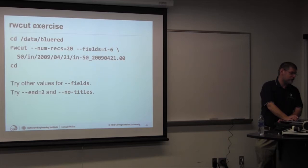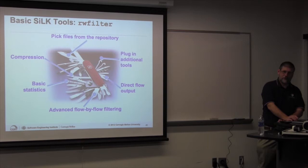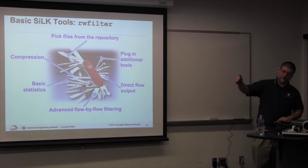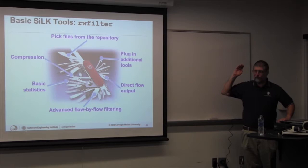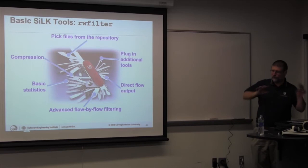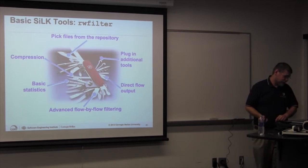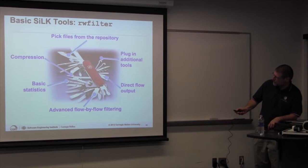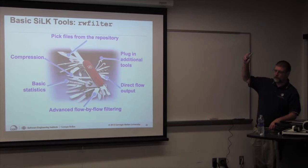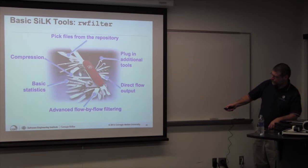The rw_filter is the Swiss Army knife of silk. Its job is to take records out of the repository based on criteria you specify: records from last week, on port 443, with the SYN flag but not the ACK flag. It's very much in the Unix pipe model — rw_filter reads from the repository and writes binary output to standard out or a file.